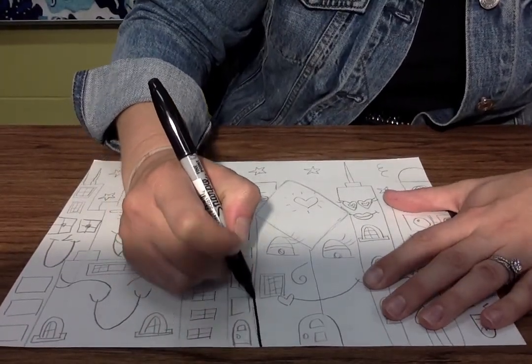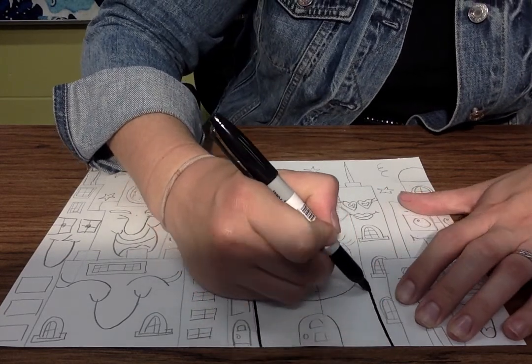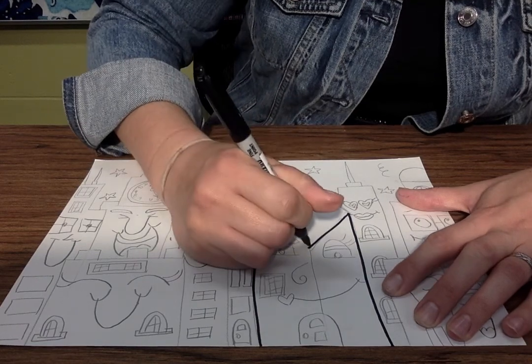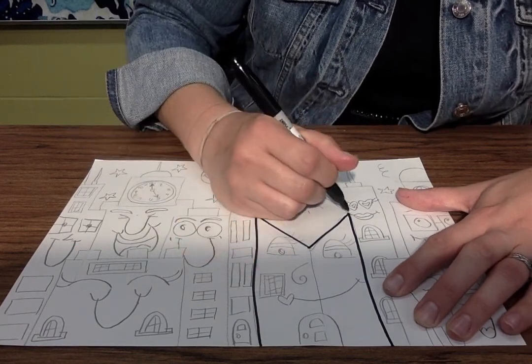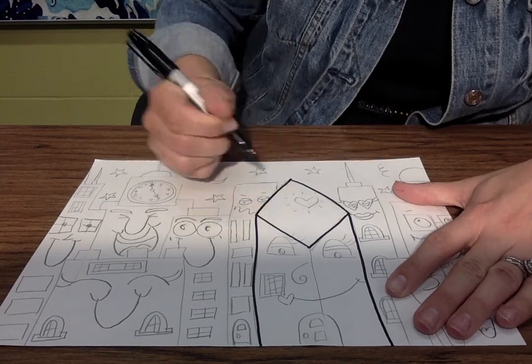It's always good, once you're done tracing everything, to go ahead and give it an eraser wash. For my students that are tracing with black colored pencil, you just want to trace as best you can.